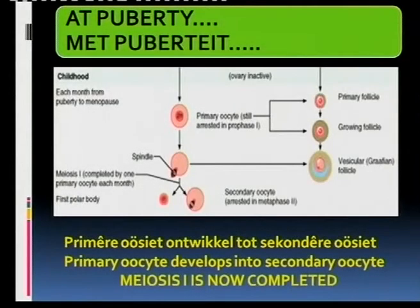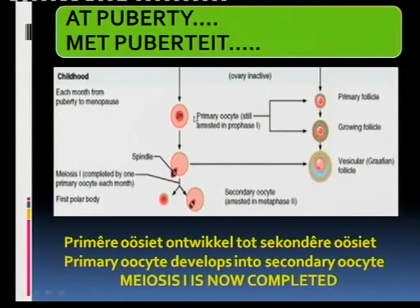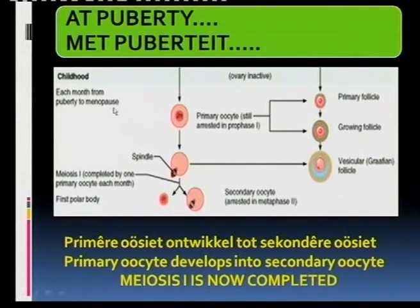What happens at puberty? There is only one cell on the floor. And this is what happens each and every month as from puberty. This will last up till menopause when menstruation stops.